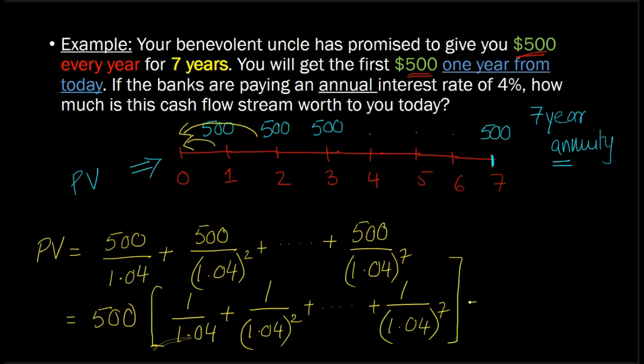Now, it turns out that you can use a little bit of fancy math, which I'm not going to bore you with, but all of this sum, these expressions inside the brackets, solve out to 1 minus 1 over 1.04 raised to the power 7, divided by 0.04. So all of this sum basically solves out to this expression right here.